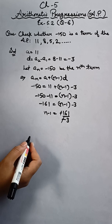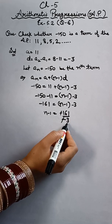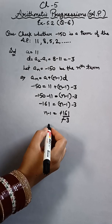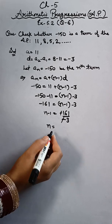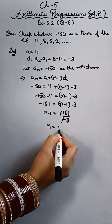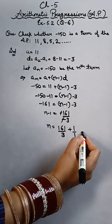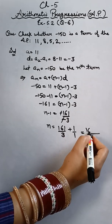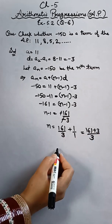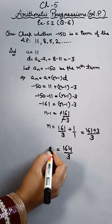But 161 is not divisible by 3, so we'll write it as is. Now finding N's value, the one that's being subtracted from n moves to the other side and becomes plus. By taking LCM, we will get 164 upon 3.